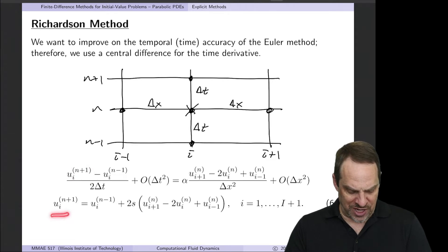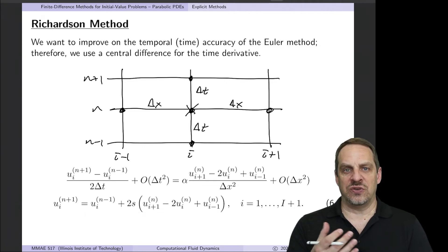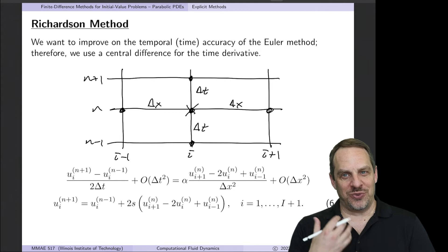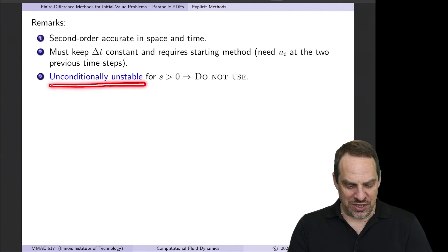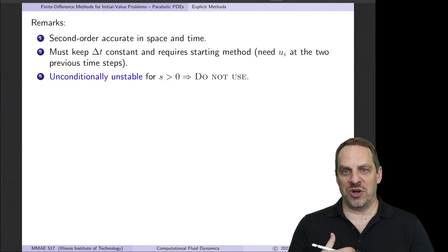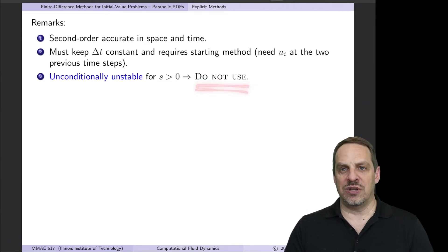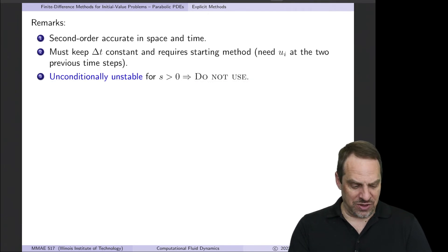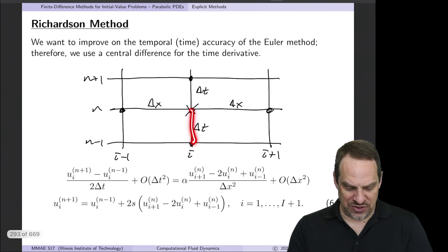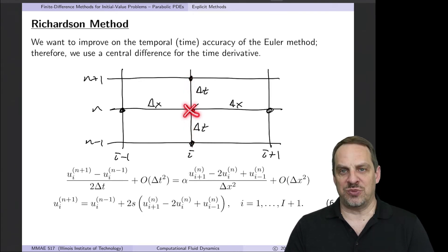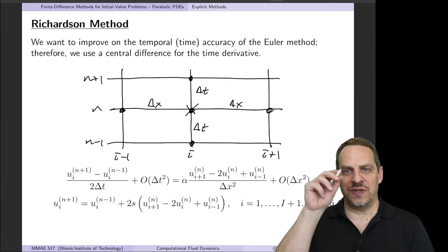Solving for u_i^(n+1) is no more difficult than the first-order explicit method. However, the Richardson method turns out to be unconditionally unstable — there are no values of s for which it is numerically stable. So we do not use it. You also notice you must keep Δt constant, because the Δt values must be equal for x-marks-the-spot to be exactly in the middle of the previous and next time steps.